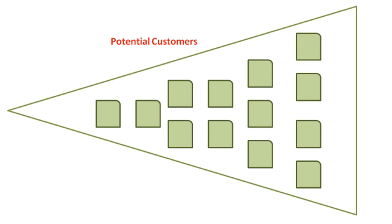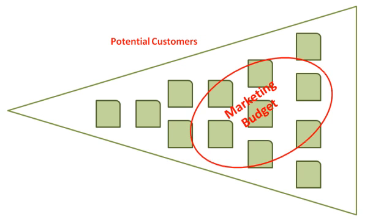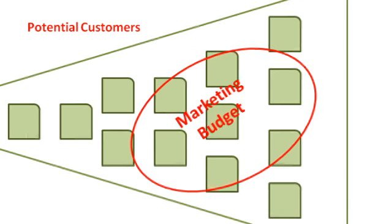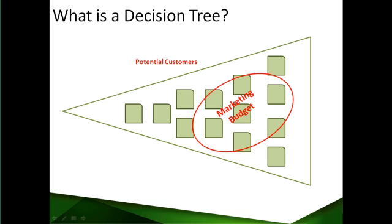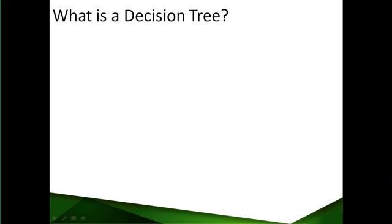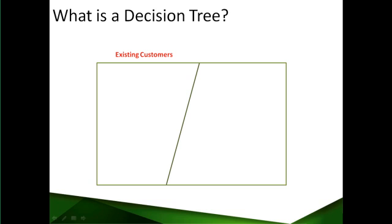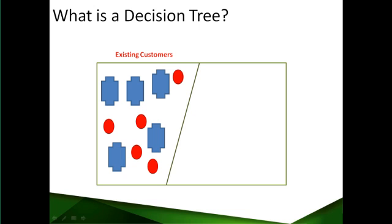Now, the credit card company has a fixed marketing budget that allows it to market its products to a limited set of people out of this large population of potential customers. The company wants to utilize its marketing budget in such a way that it attracts the maximum number of profitable customers. In a sense, the company is saying, I have 10 customers, 5 of whom are profitable, and 5 are unprofitable. I want to add 10 more customers to my customer base, but I want all or most of them to be profitable.